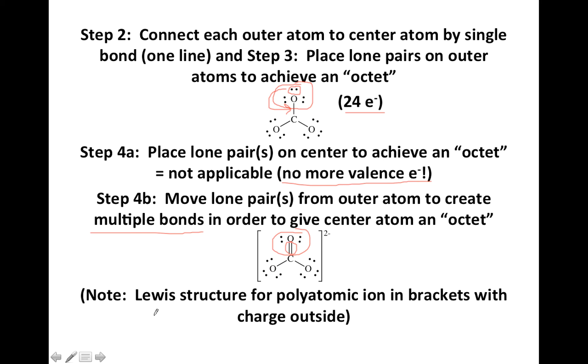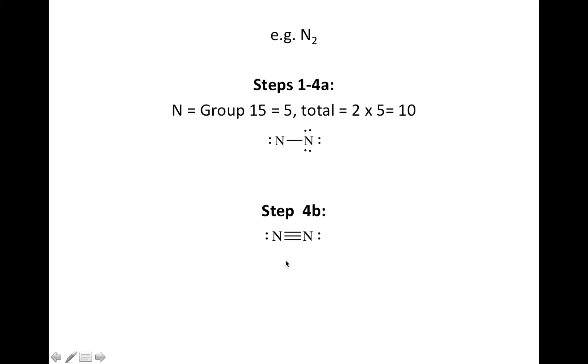And the final note down at the bottom, it just says for polyatomic ions, Lewis structures are usually shown in brackets with the charge outside.